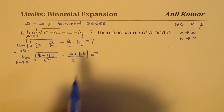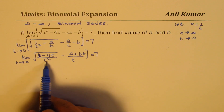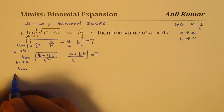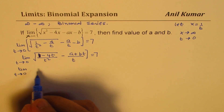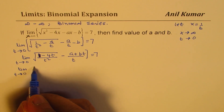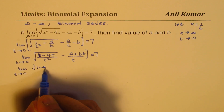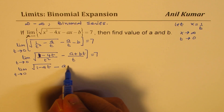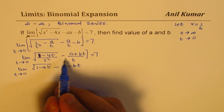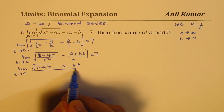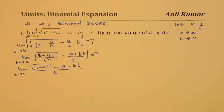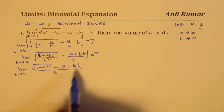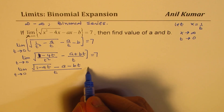Taking t^2 out of the square root, we get limit t approaches 0 of [sqrt(1 - 4t) minus a minus bt] over t, equals 7. We are just taking t common throughout to arrive at this simplified form.